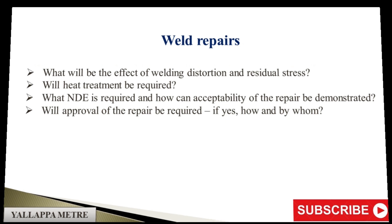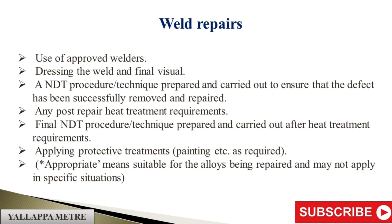Weld Repairs process steps: use of approved welders; dressing the weld and final visual; an NDT procedure/technique prepared and carried out to ensure that the defect has been successfully removed and repaired; any post-repair heat treatment requirements; final NDT procedure/technique prepared and carried out after heat treatment; applying protective treatments such as painting, etc., as required. These are appropriate means suitable for the alloys being repaired and may not apply in specific situations.